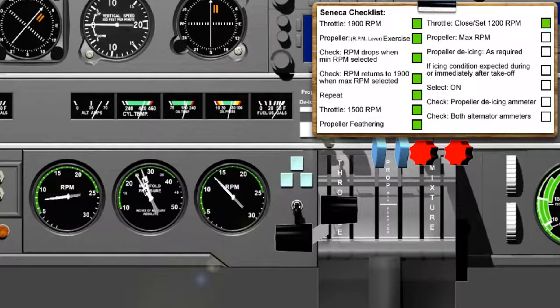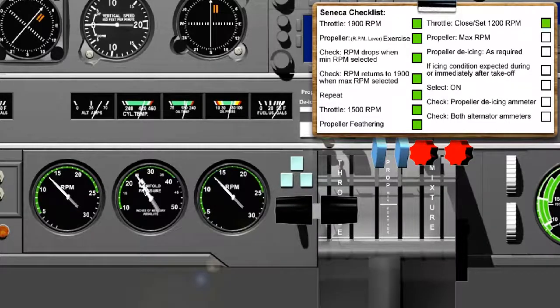Throttle, close and set 1200 RPM. Initially the throttle lever should be closed and the slow running RPM checked at between 700 to 800 RPM. Then the throttle should be set to obtain 1200 RPM. At this RPM the engine should run smoothly and the spark plug should not oil up while you're carrying out the checks on the other engine.